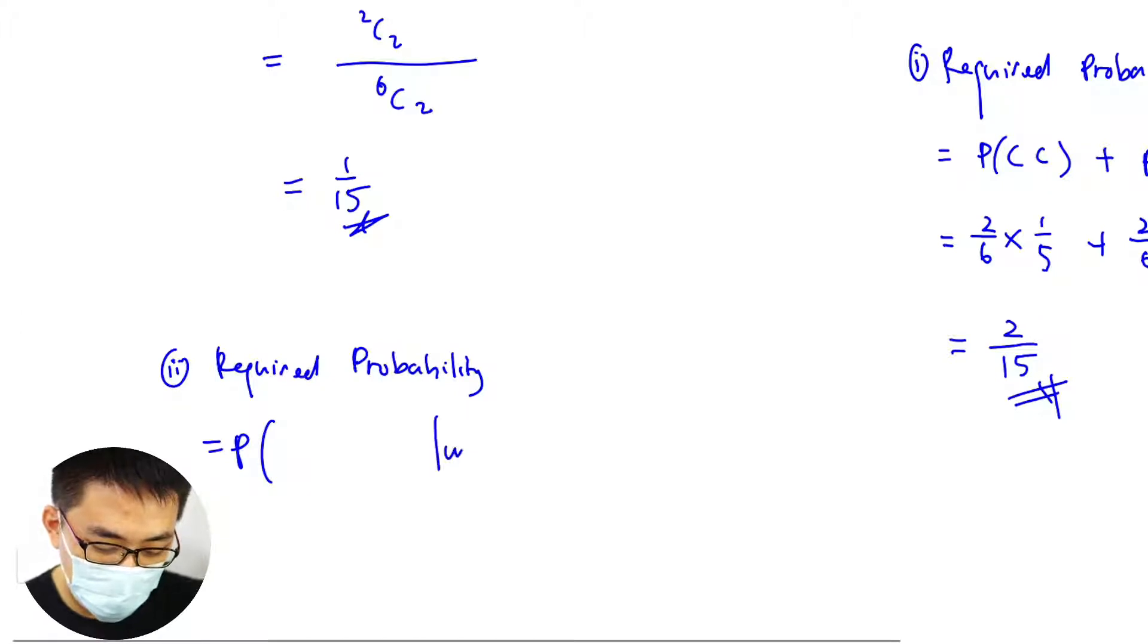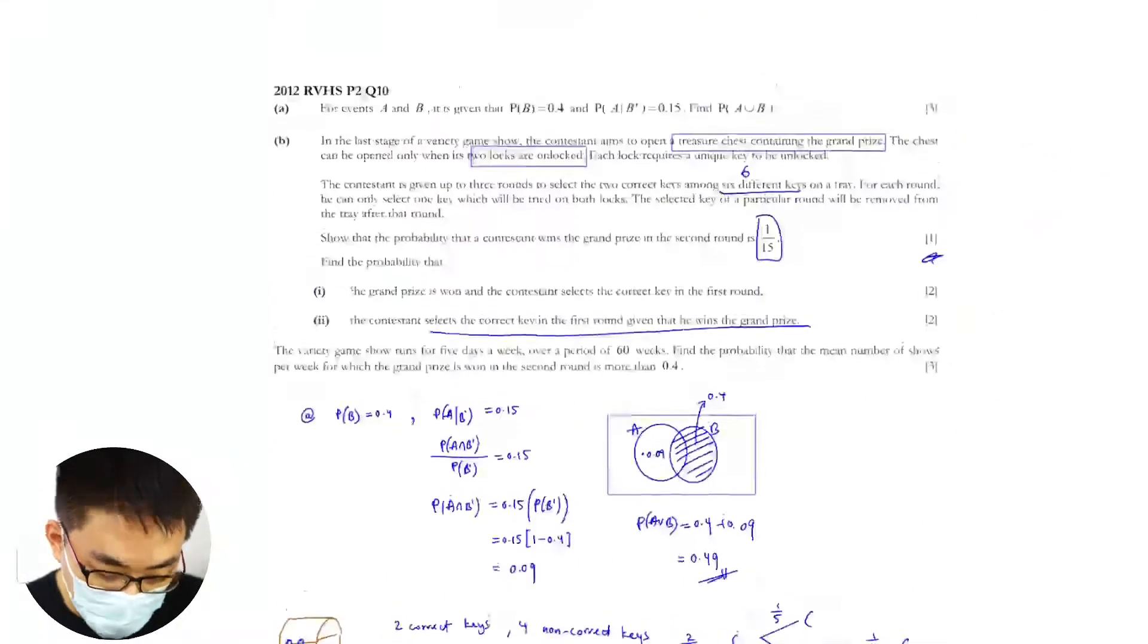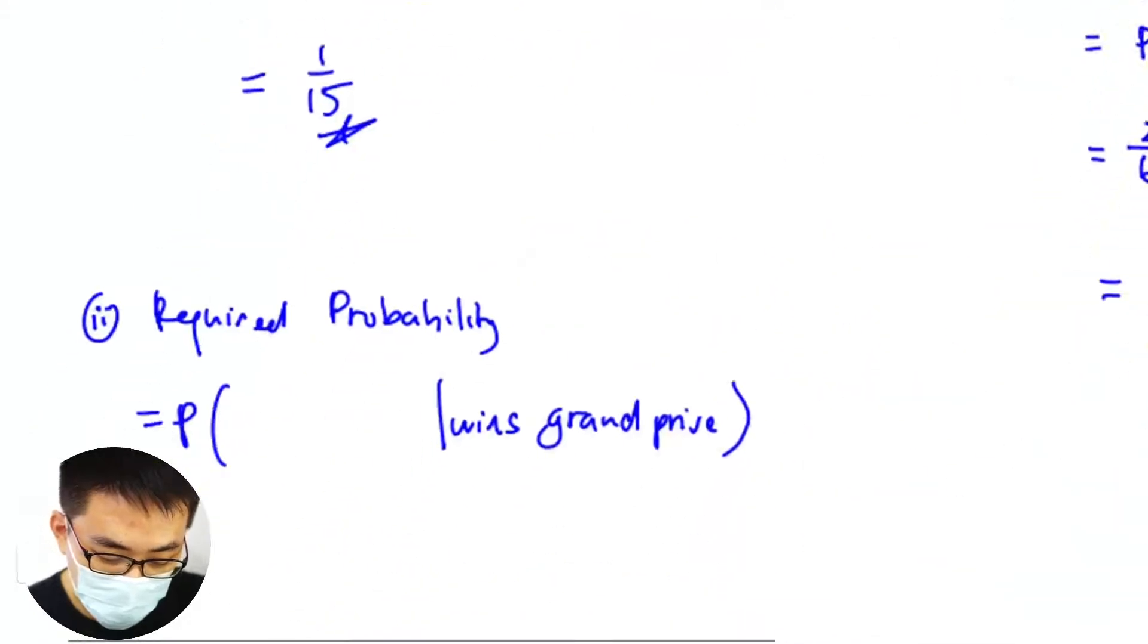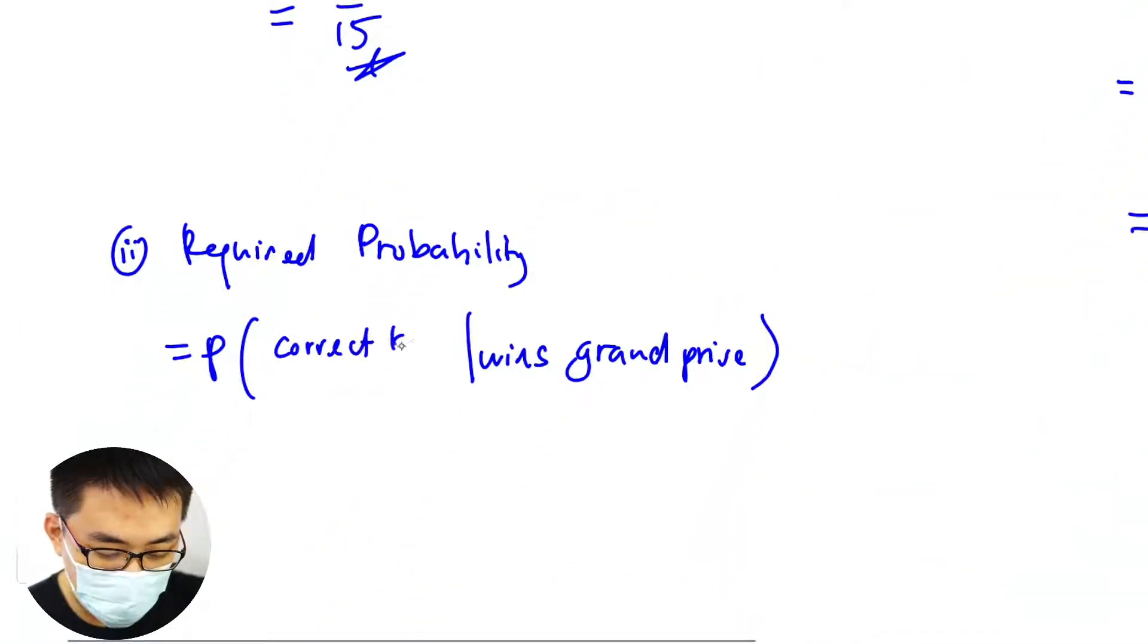Given that win grand prize. This probability is contestant selects the correct key first round. Okay, so what you want is the one on top.